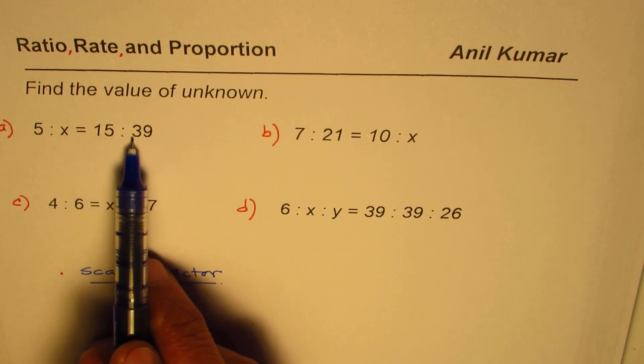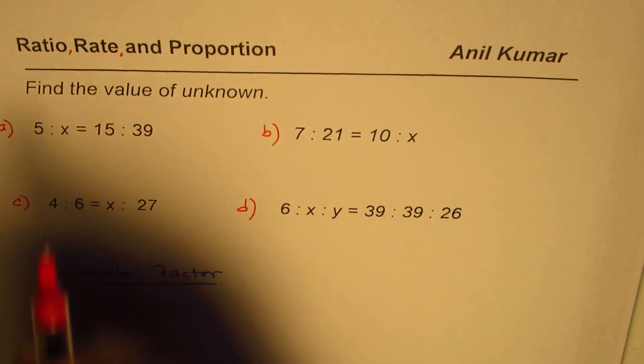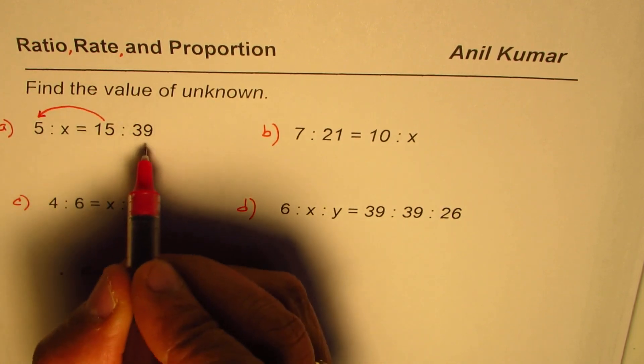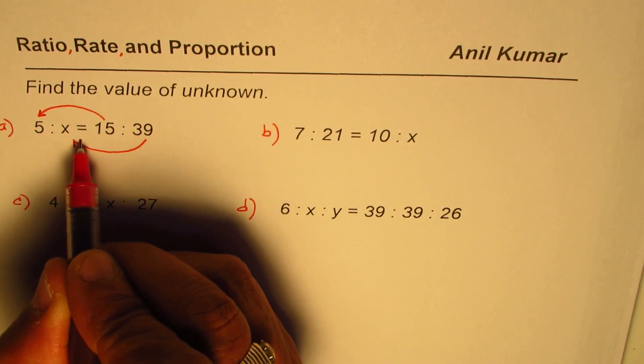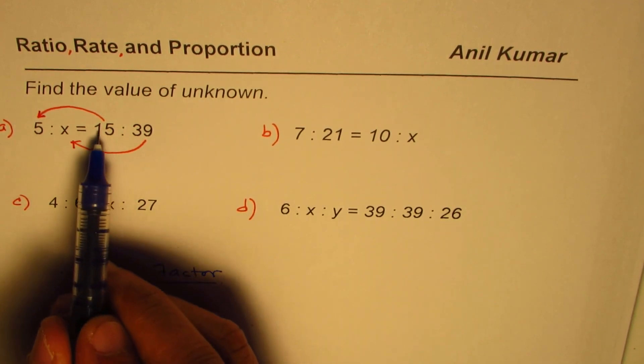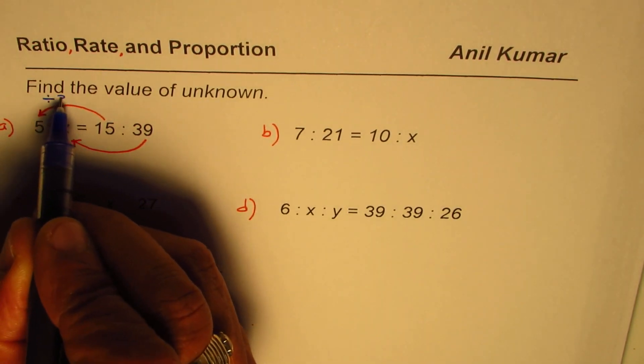So what we need to find is what 5 is. Let us see how do we get from 15 the number 5, and we'll apply the same rule to get x. That is the strategy for us. Clearly, you need to divide 15 by 3.